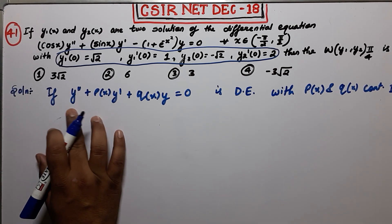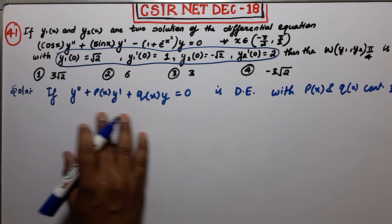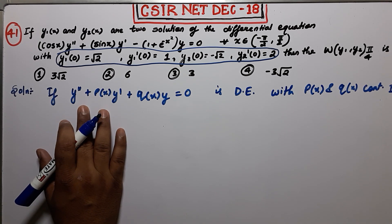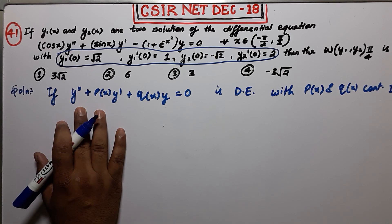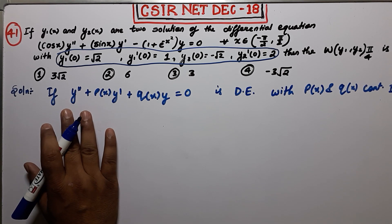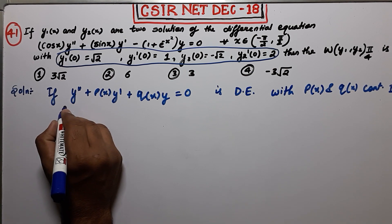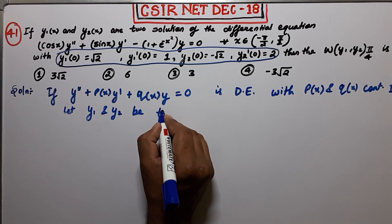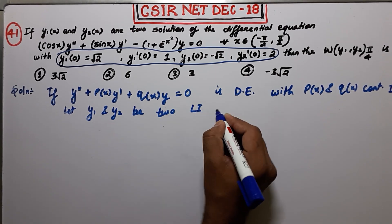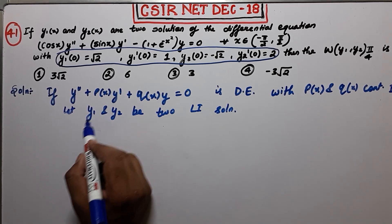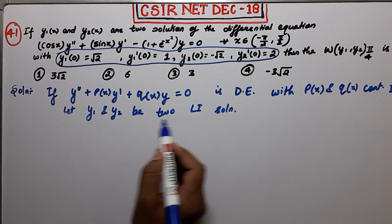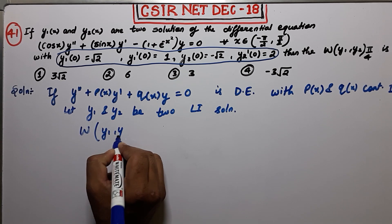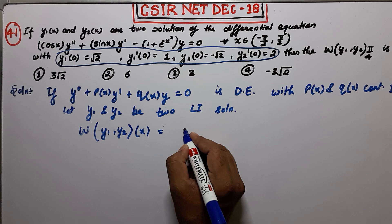Since it's a second-order equation, the dimension of the solution space for this differential equation is 2. That means it has two linearly independent (LI) solutions. So assuming y1 and y2 are two LI solutions — since the dimension is 2, we can assume there exist y1 and y2 as two LI solutions.